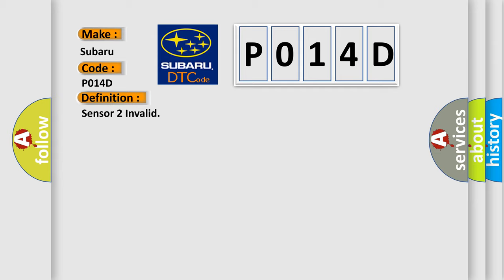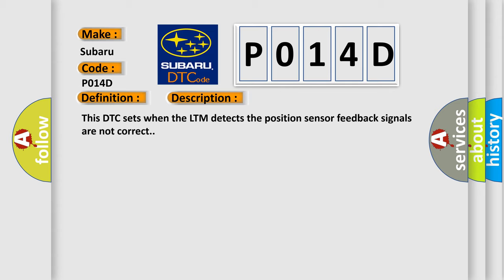The basic definition is Sensor 2 Invalid. And now this is a short description of this DTC code. This DTC sets when the LTM detects the position sensor feedback signals are not correct.